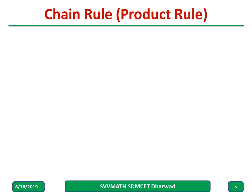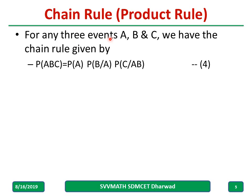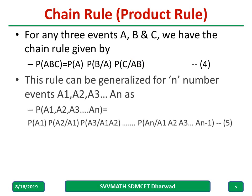Chain rule: for any three events A, B, and C, the chain rule gives the probability of A, B, C as the probability of A, into the probability of B given A has already occurred, into the probability of C given A and B have already occurred. In general, for events A1 to An, we write: probability of A1, times probability of A2 given A1 has occurred, times probability of A3 given A1 and A2 have occurred, and so on up to probability of An given A1, A2, up to A(n-1) have occurred.